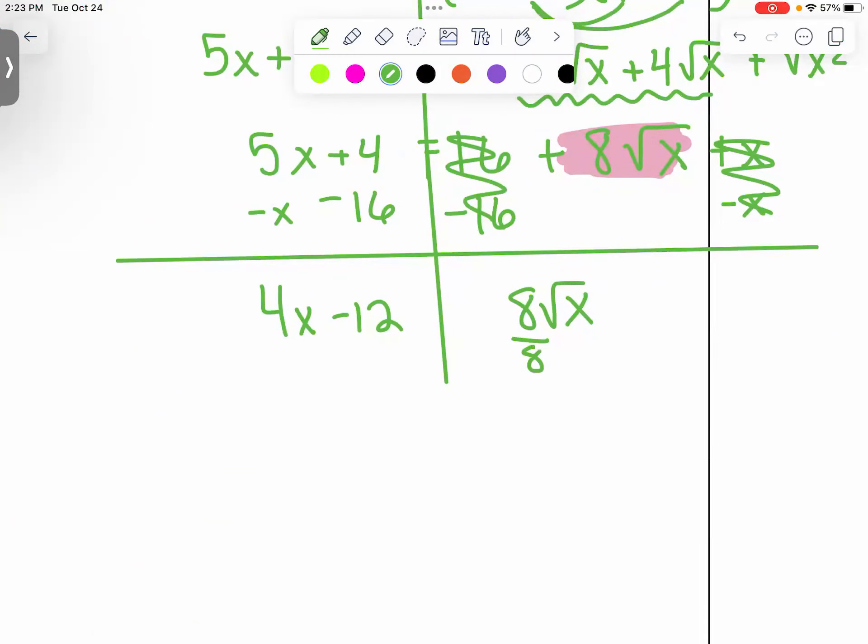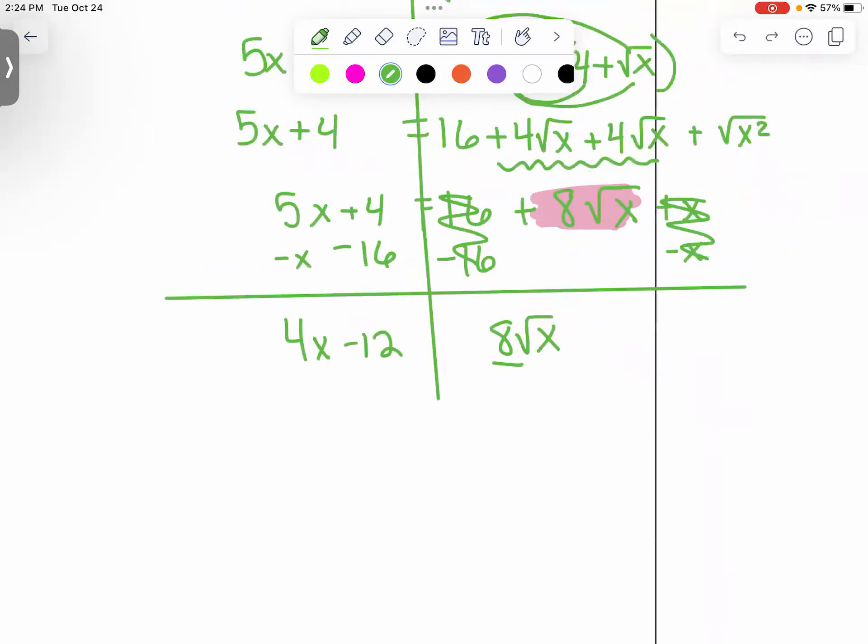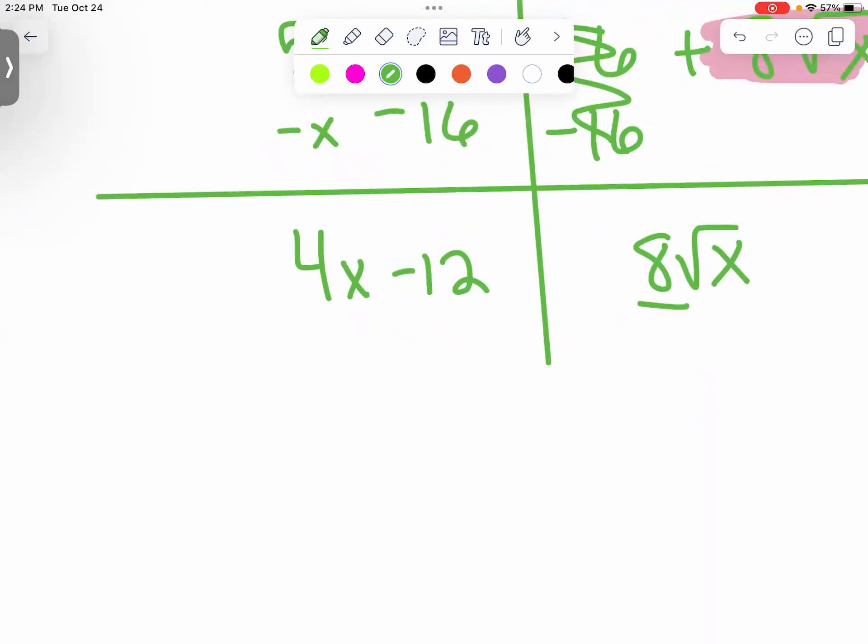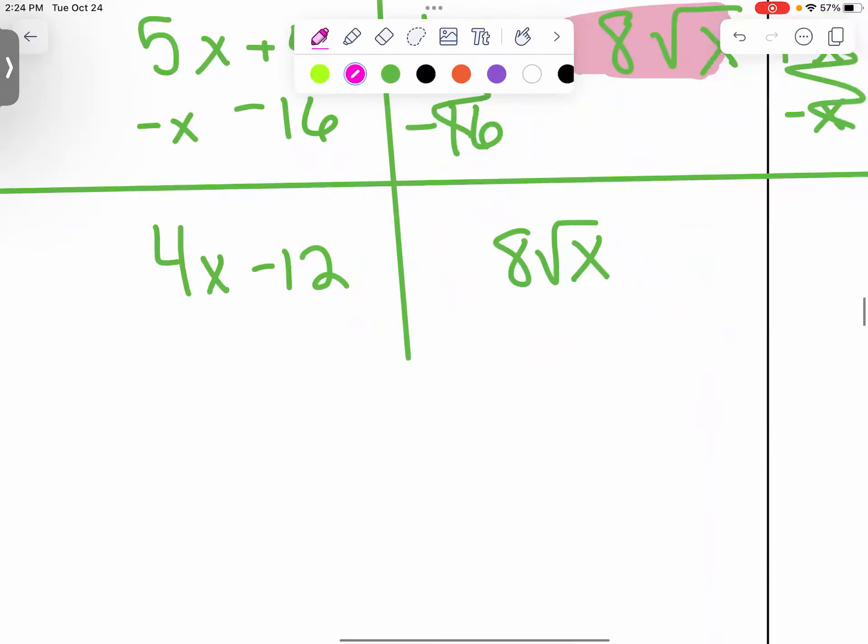Now some students want to divide by eight here to get the square root by itself because our goal is to get the new square root by itself. We had to square both sides. We had to get the eight square roots of x by itself. And now we're going to square both sides again. I would not recommend dividing by eight because we're going to get decimals or fractions and that's poopy. Now, how do you think we get rid of the square root? Squared. Yes. And we're going to have to do that over here. When we square it here, we are allowed to distribute because it's not a binomial. What's eight squared? 64. What's the square root squared? X.